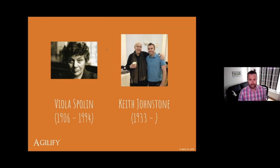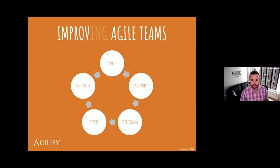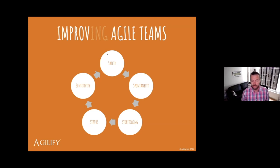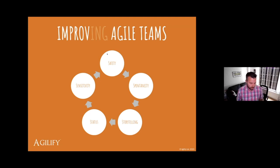In this half hour, I'll share something from each of the five elements of my book — five chapters. We've got safety, spontaneity, storytelling, status, and sensitivity. I'll give you a brief look into each of those five principles and how I apply them as an agile coach.